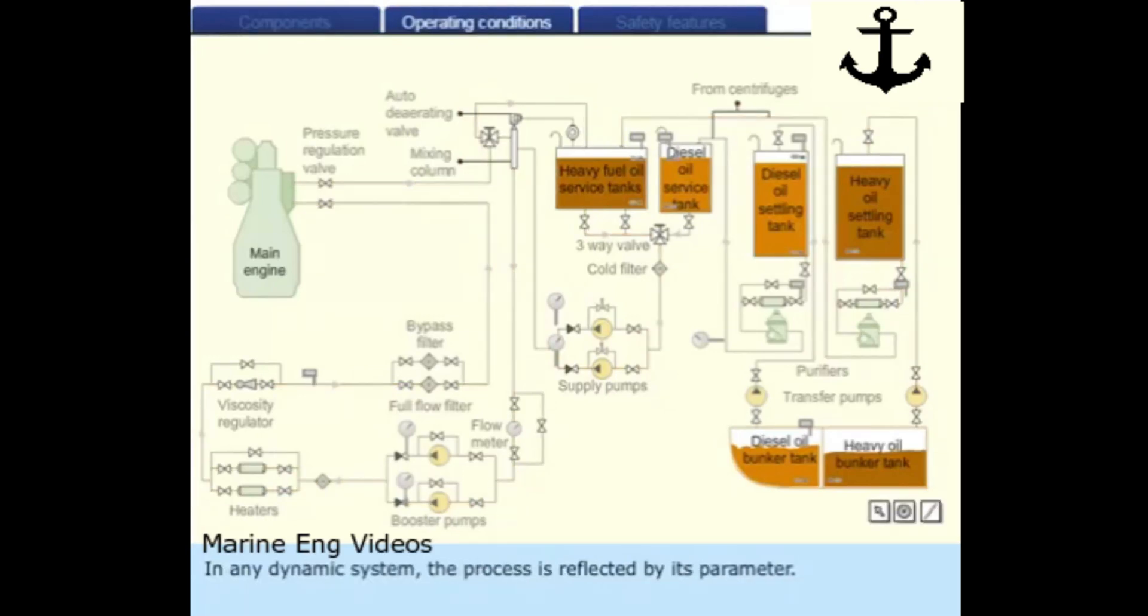In any dynamic system, the process is reflected by its parameter. Any parameter deviating in value from its normal levels will signify a change in the system process.